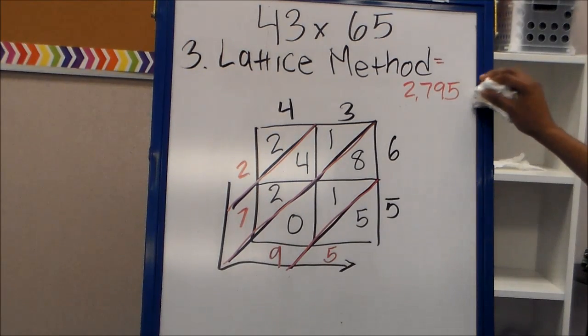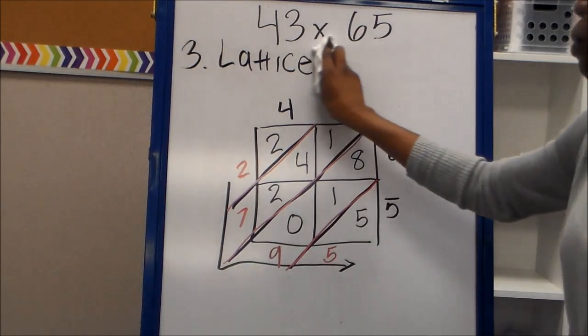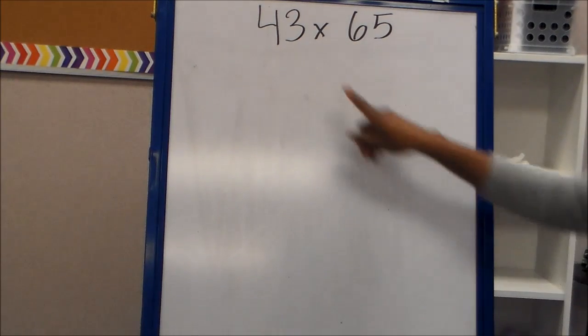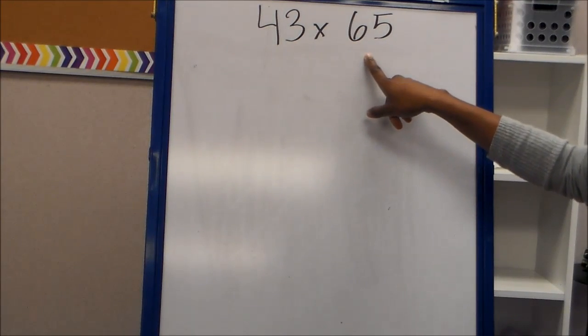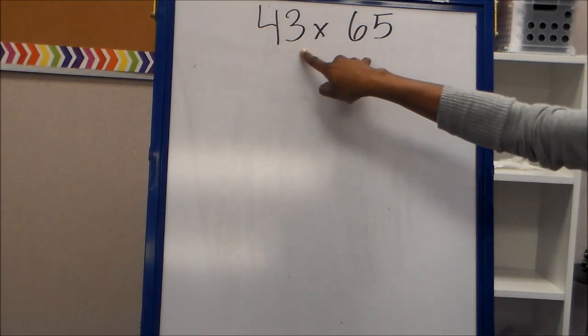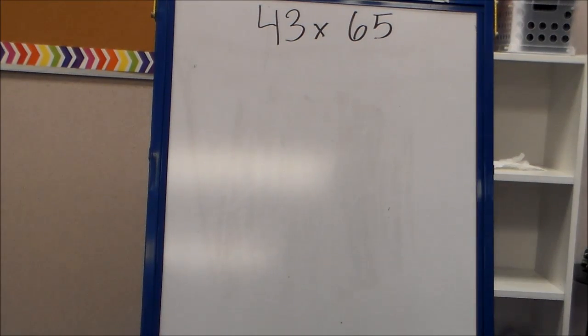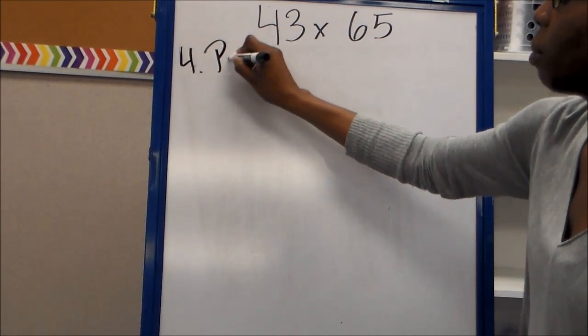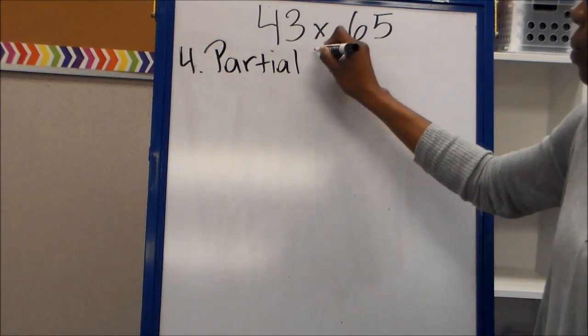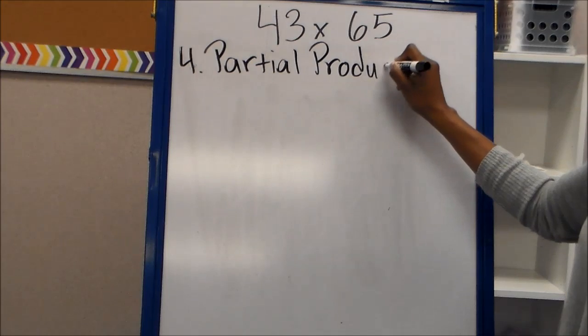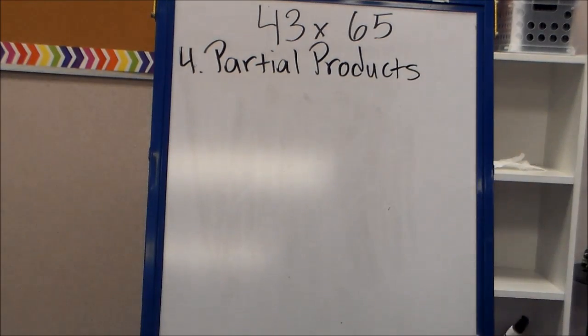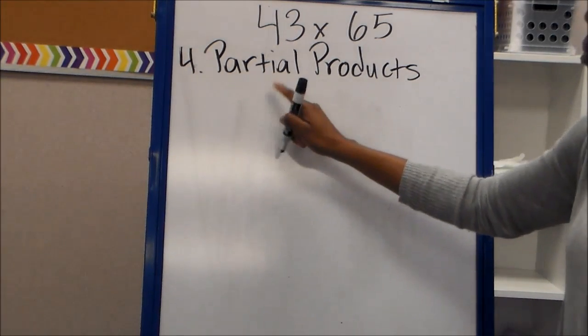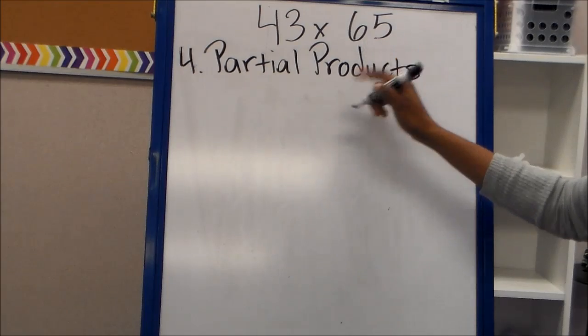So the last method is partial products. And we usually do partial products with larger numbers by a single digit number because multiple digits might get a little confusing, but we can do partial products with this. So the fourth method is partial products.